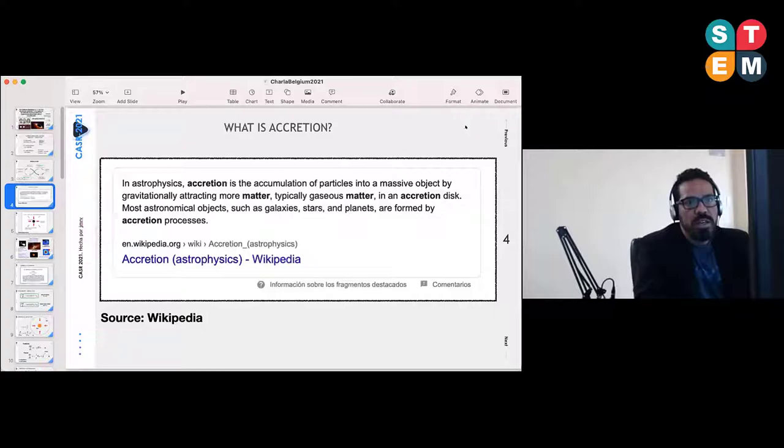The main point of this talk is all related with accretion. So what is accretion? I found this definition in Wikipedia which looks to me very standard to begin with. In astrophysics, accretion is the accumulation of particles into a massive object by gravitationally attracting more matter, typically gaseous matter in an accretion disk. Most astronomical objects such as galaxies, stars, and planets are formed by accretion processes.